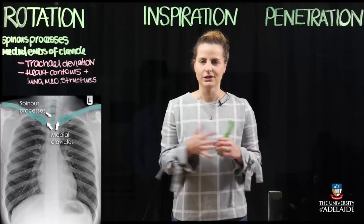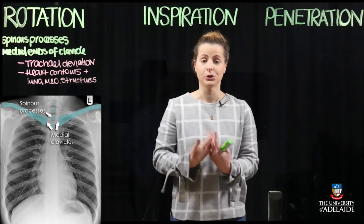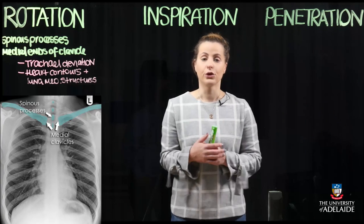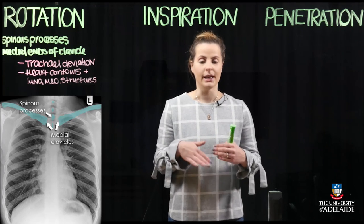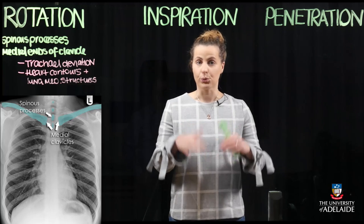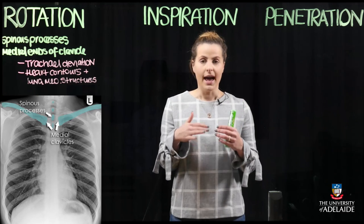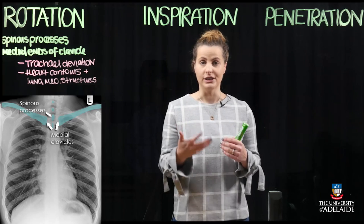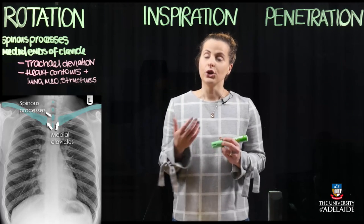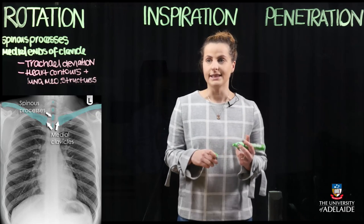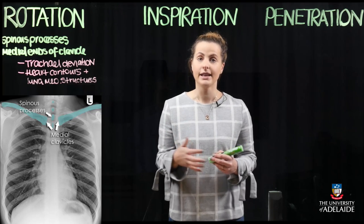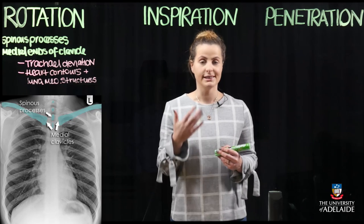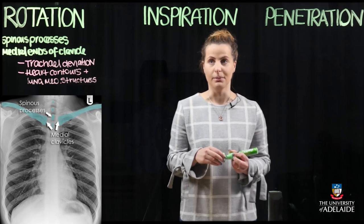The next thing to consider is the respiratory phase of the patient. The gold standard for a chest radiograph is to have the patient breathe in and hold — the patient should be in a full inspiration state. When looking at the inspiratory state, the anterior ends of ribs five through to seven should superimpose the diaphragm in the mid-clavicular plane.